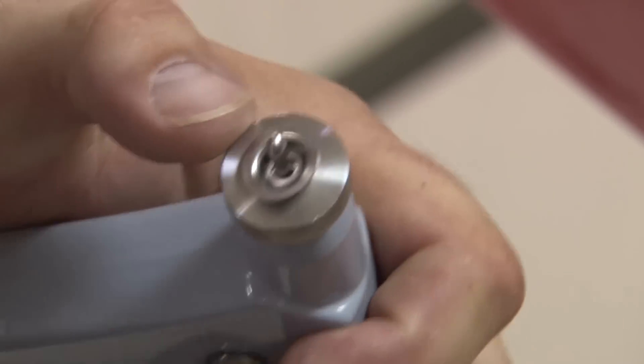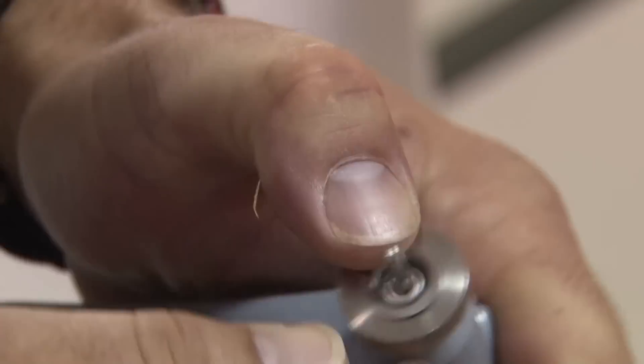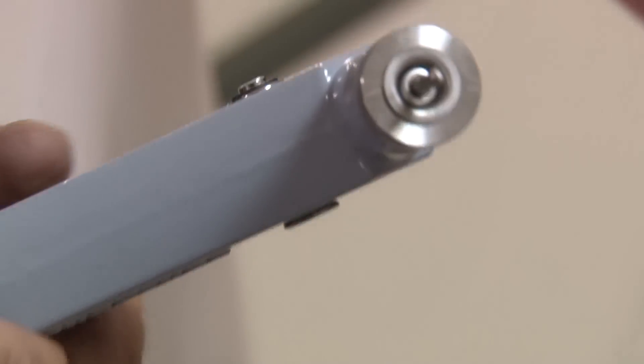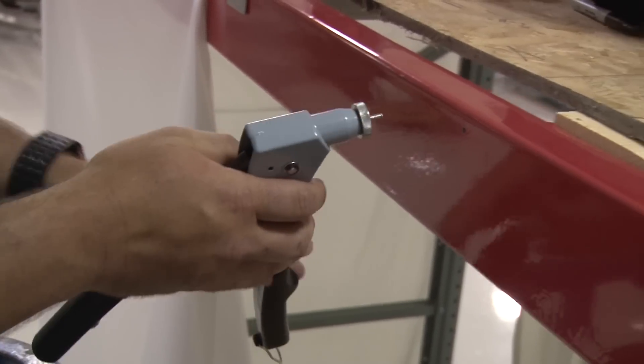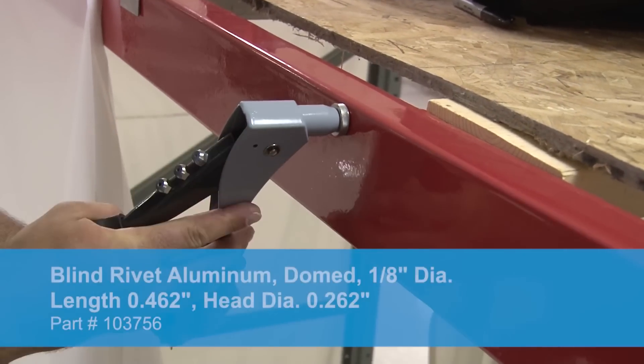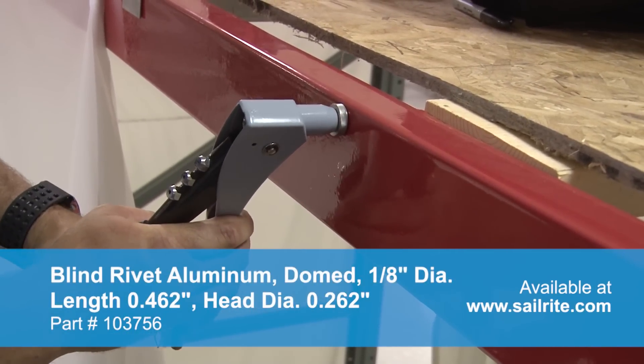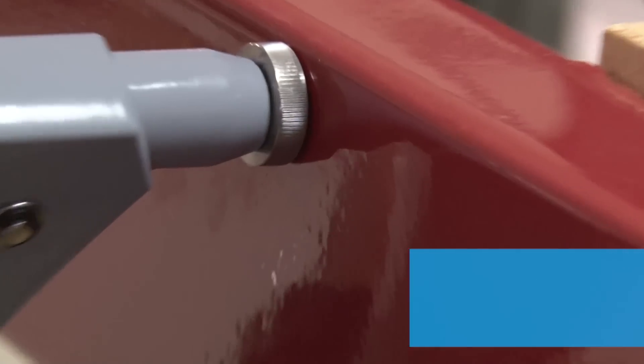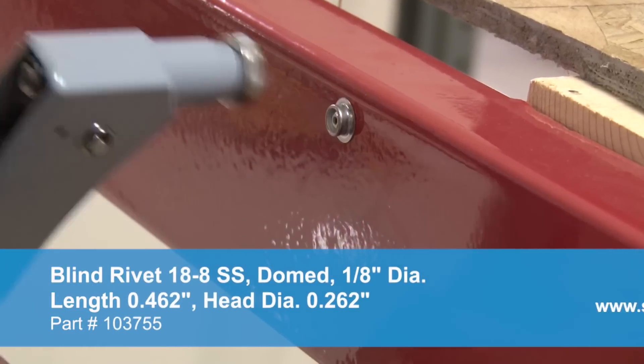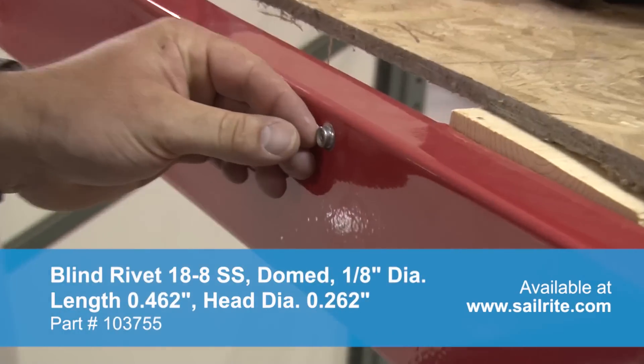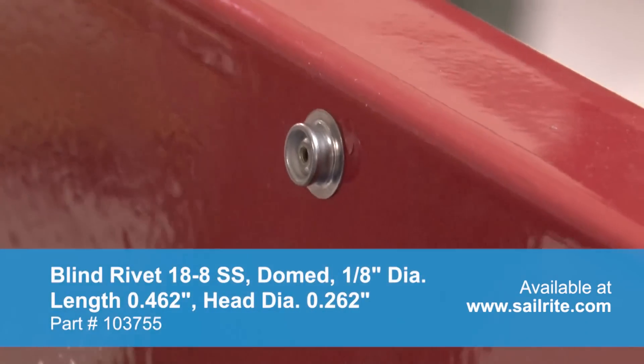Simply insert the blind pop rivet and then press the stud into place inside the die. Sailrite typically recommends aluminum rivets, which are readily available. However, stainless steel rivets can be used as well. They are more difficult to find but Sailrite carries them. For this application we use the stainless steel rivet.